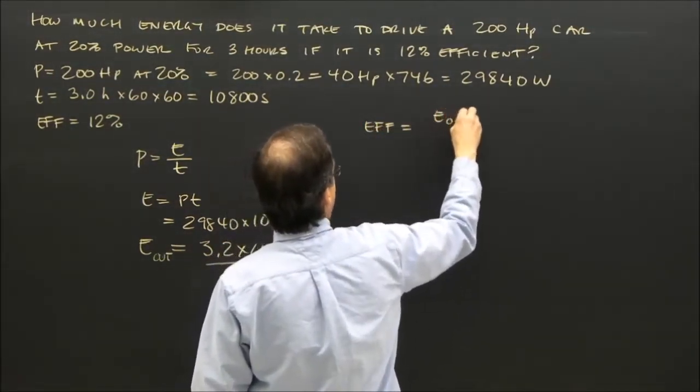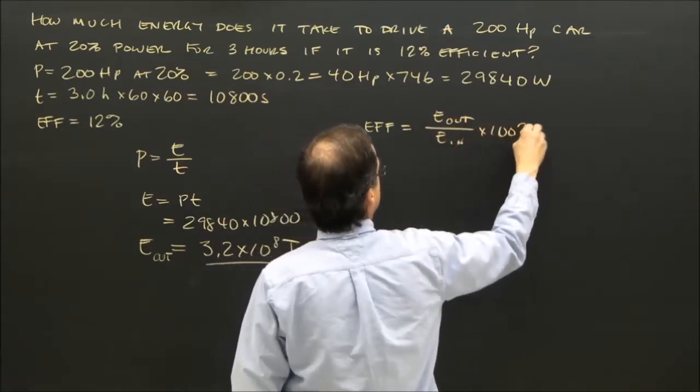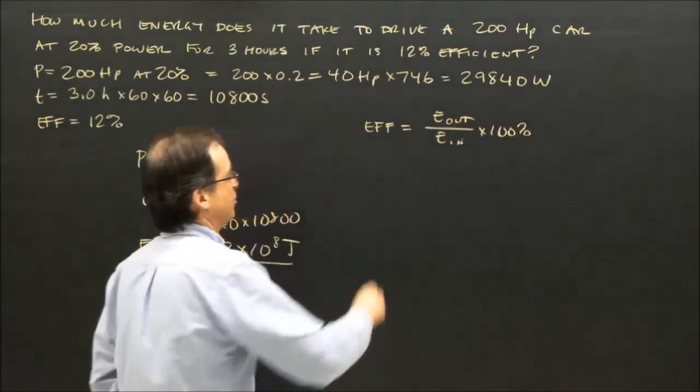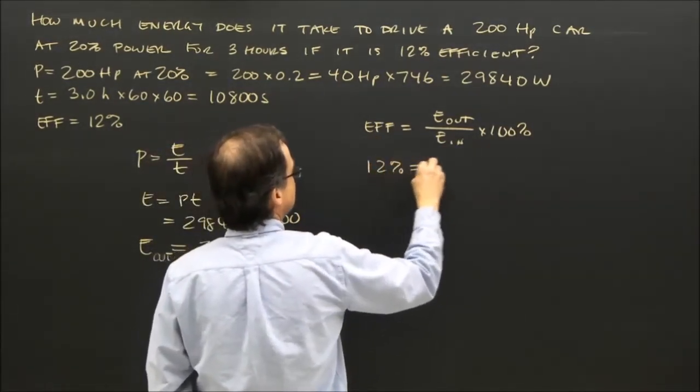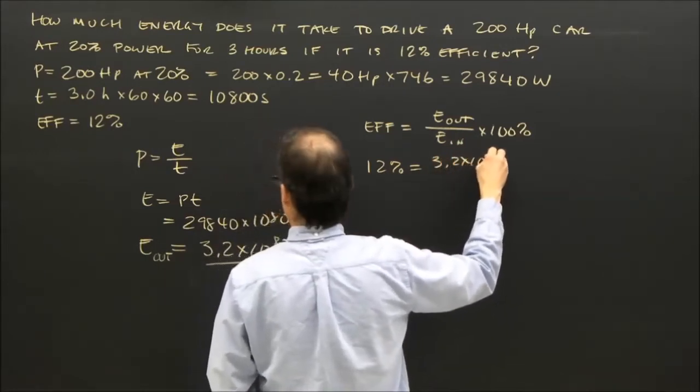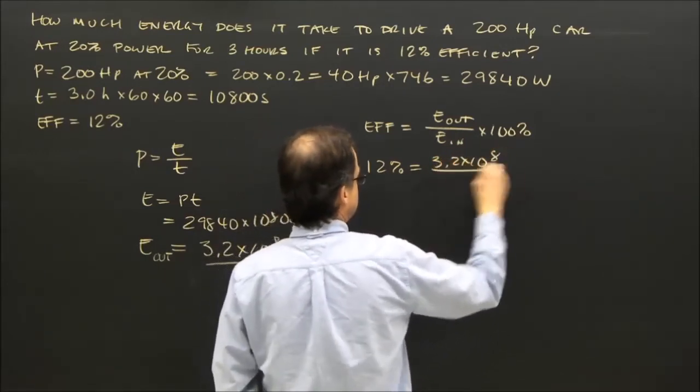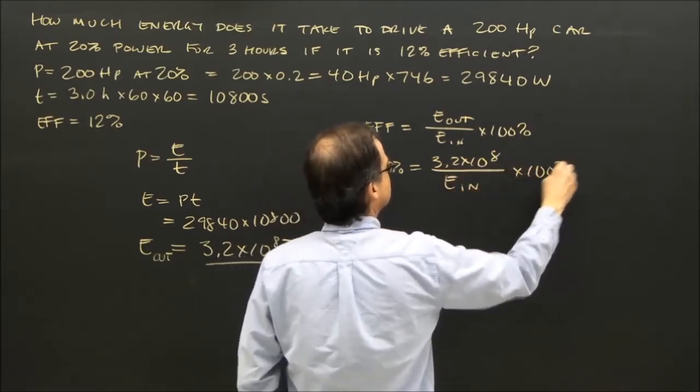So I get my formula. Efficiency equals energy out divided by energy in times 100%. And let's plug in the number. Efficiency is 12%. The energy I got out was 3.2 times 10 to the 8. The energy in is what I'm looking for. So we can solve for that.